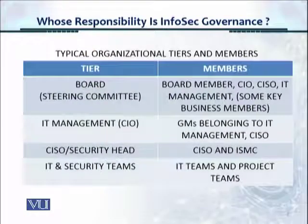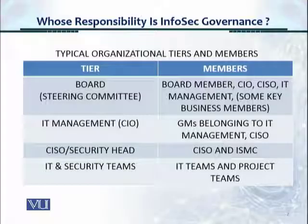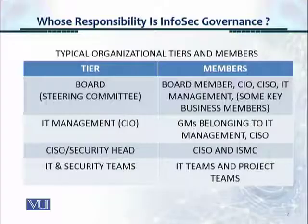This is the typical organizational tiers and who are the members at each tier. There is a board or a steering committee, consisting of at least one board member, CIO, CISO, IT management, and possibly some key business members — though not always. In some cases, like in banks, they have some key business members as well.